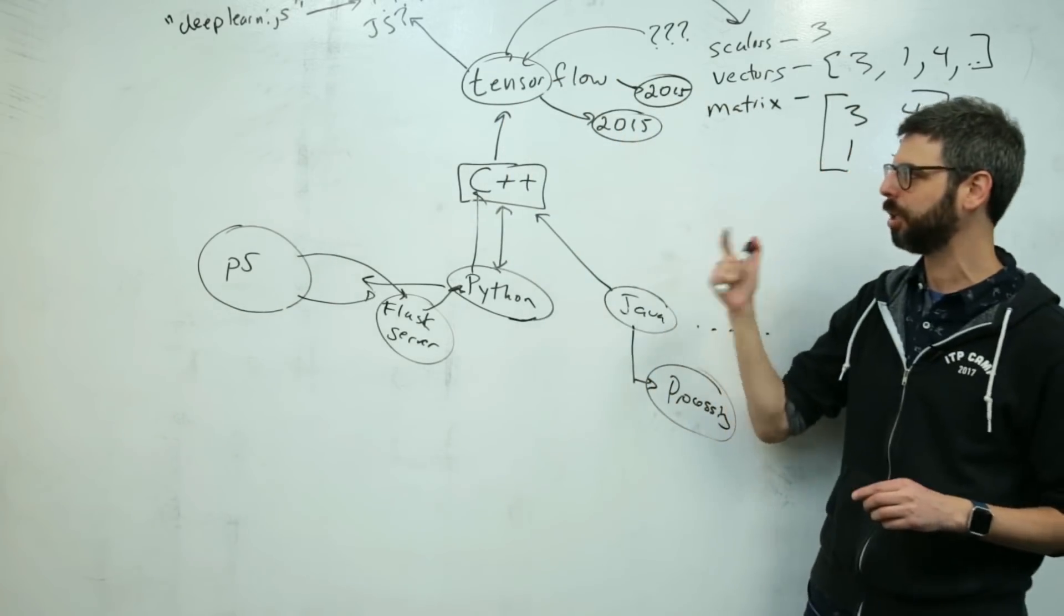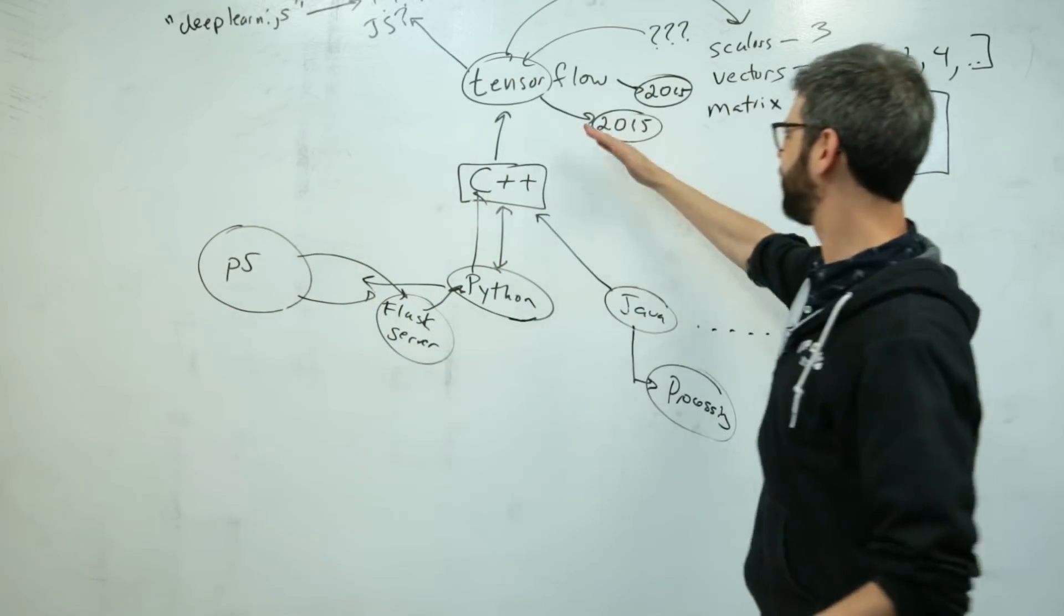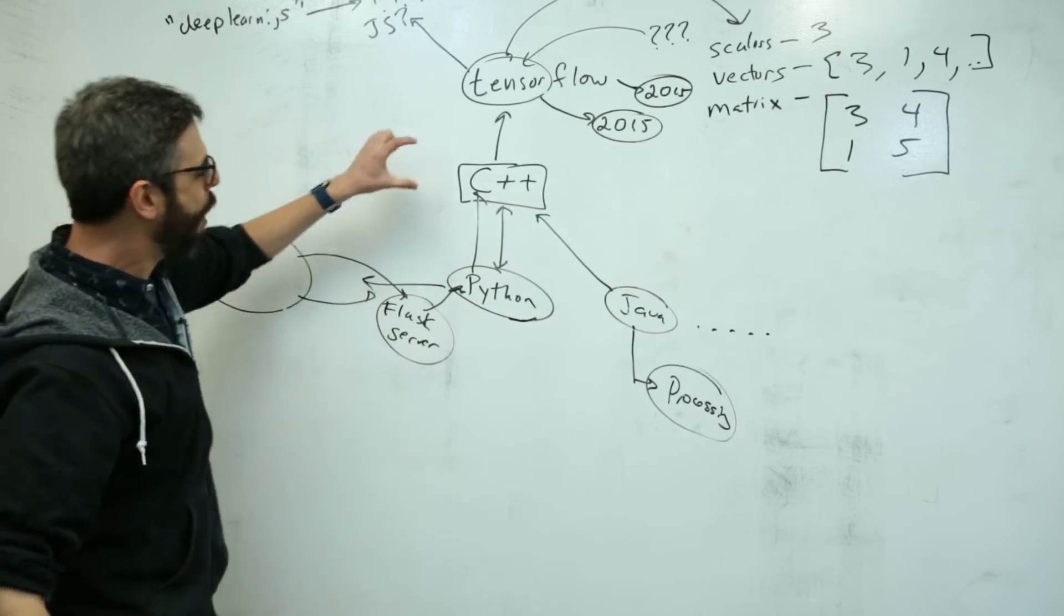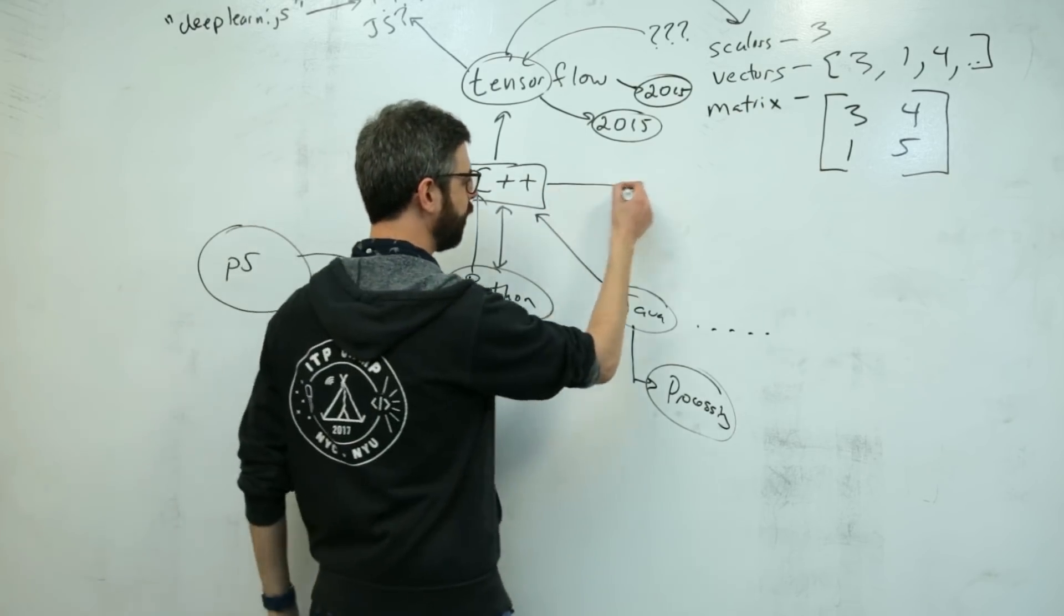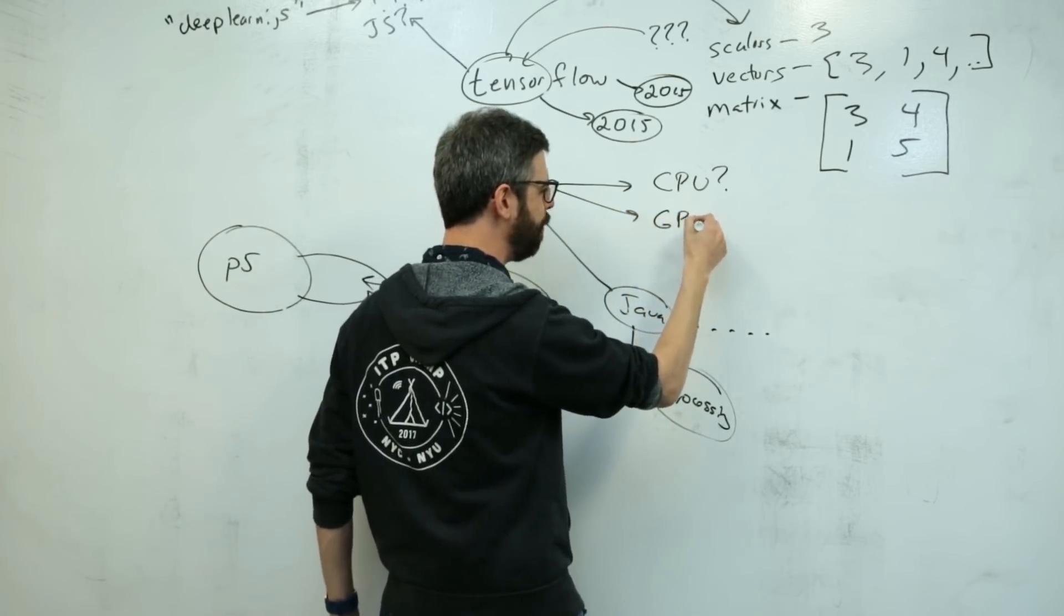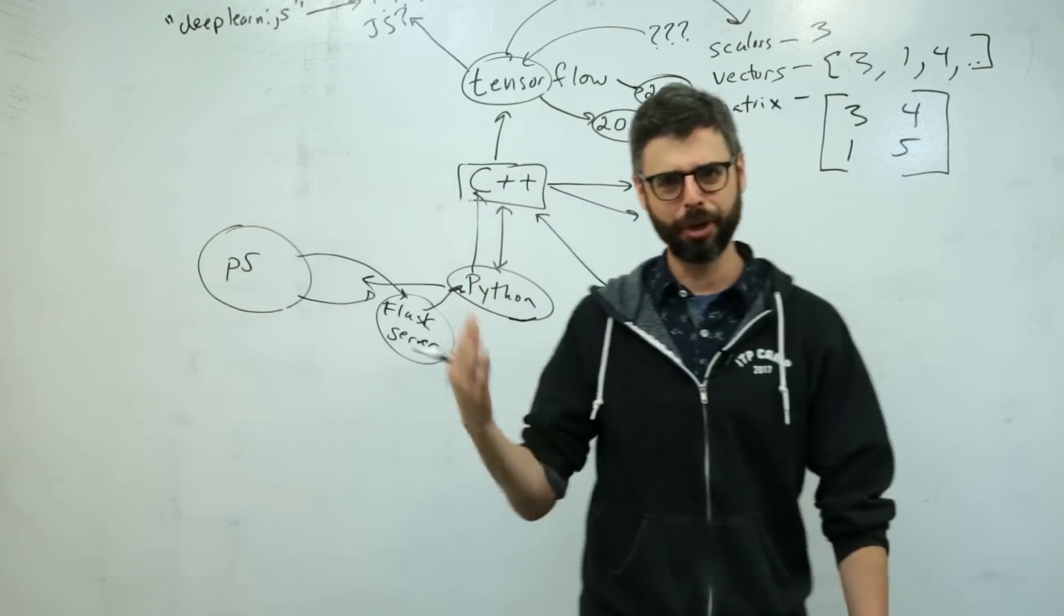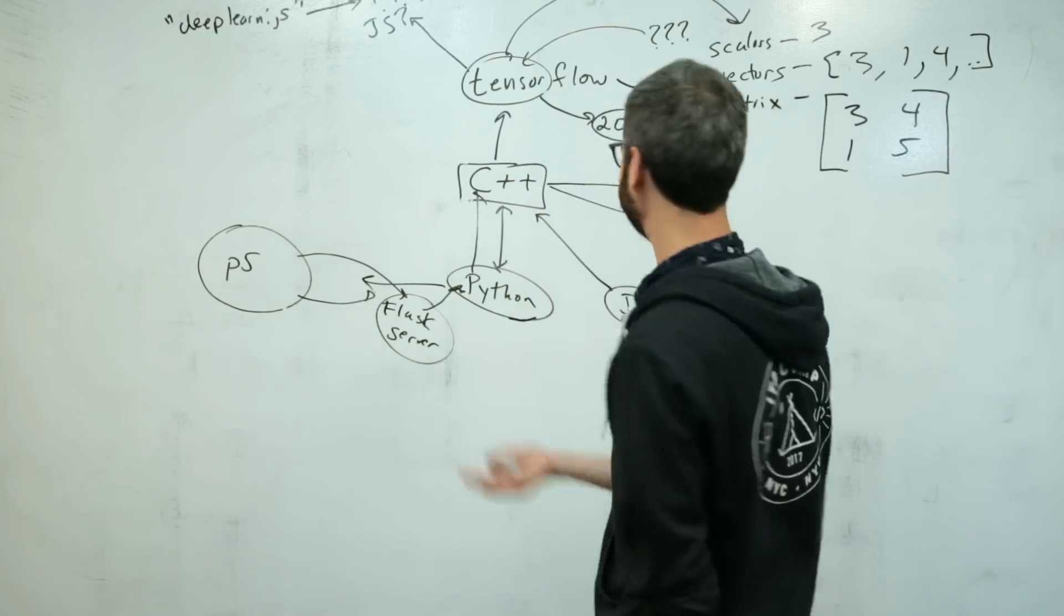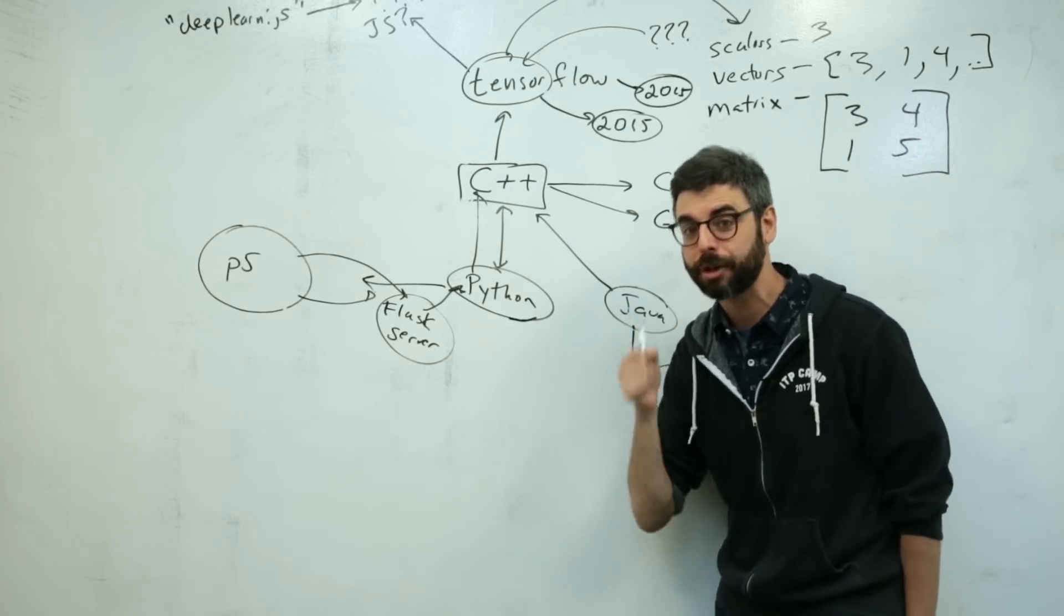One of the things that's special about doing machine learning in today's modern era with TensorFlow is where these operations that are written in C++ actually get executed. You have this question of, do they get executed on the CPU, or do they get executed on the GPU? And why should we care about this?